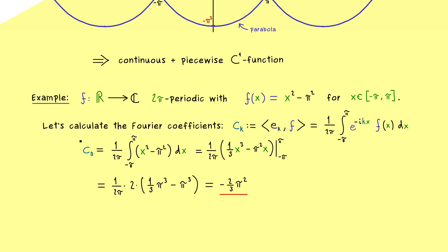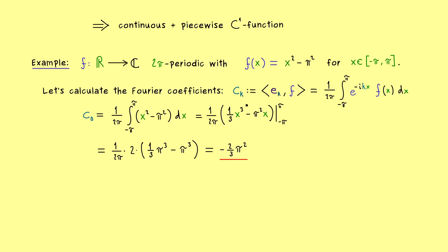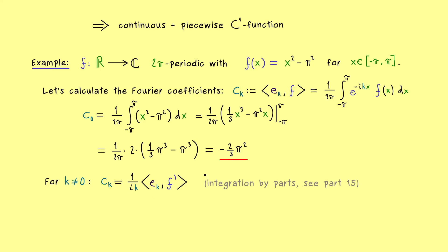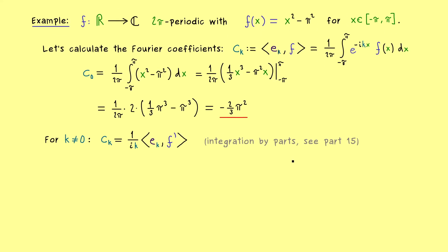Then in the next step we calculate all the coefficients cₖ for non-vanishing k. This is the harder case where we have to do integration by parts as often as needed. From the last video we already know that integration by parts brings us to the formula (1/ik) times the inner product ⟨eₖ, f'⟩. This formula makes sense because the derivative of f exists on the whole interval from minus π to π, and also because f is continuous on the whole real line.